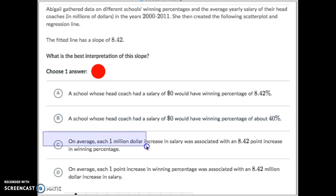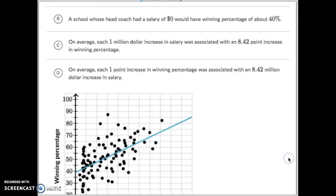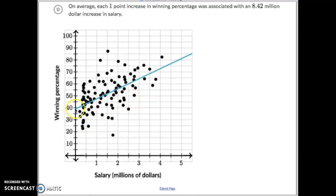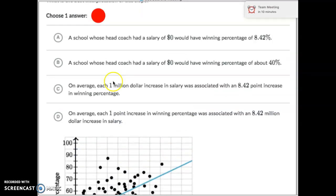Letter C. On average, each million-dollar increase in salary is associated with an 8.4% increase in winning percentage. Meaning, if you pay a coach a million dollars, they'll go up 8.42. Pay him another million, up 8.42. Yeah, that's the one we're looking for right there. So we'll put that right here.